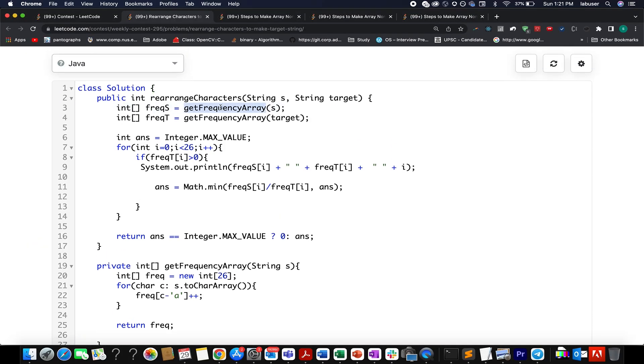I have created a helper method that tells me the frequency of each character in string S. I have applied it over string S. I have similarly done it for string T. I have taken an answer variable and initialized it to max value. I iterate over all the characters of the English language, 0 to 26. If my frequency at T index is greater than 0.